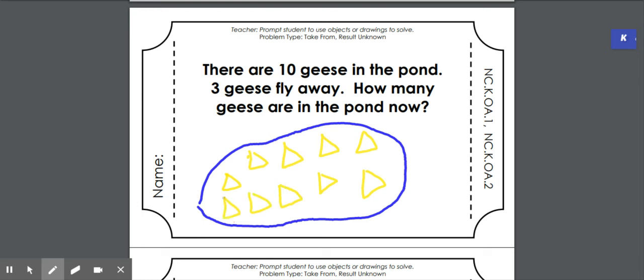All right. There are ten geese in the pond. I drew my ten geese. We're going to pretend those triangles are geese. If you can draw a goose, draw them. Let's see if I did triangles. And I still have ten triangles for ten geese.